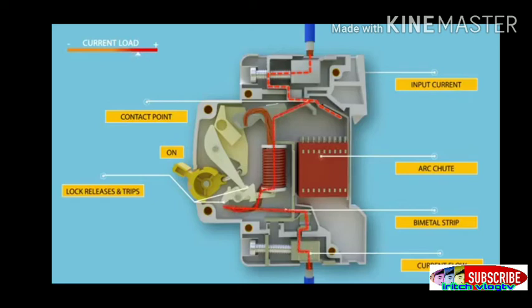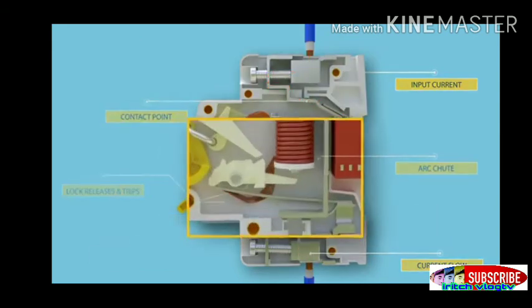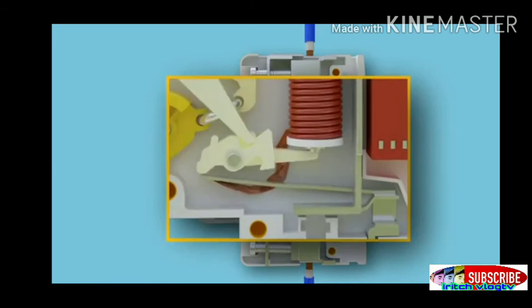This arc is then forced into arc shoot plates where the arc is formed into a series of arcs. At the same time, energy is extracted by the circuit breaker and cools it. Here's a closer look at how the tripping mechanism works.